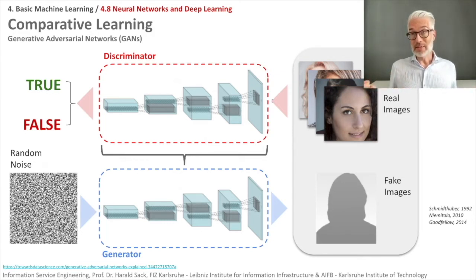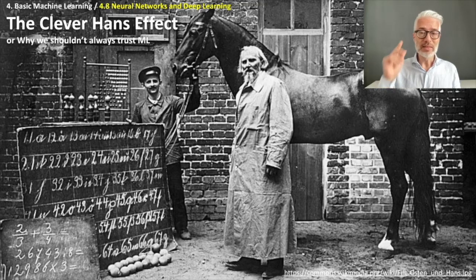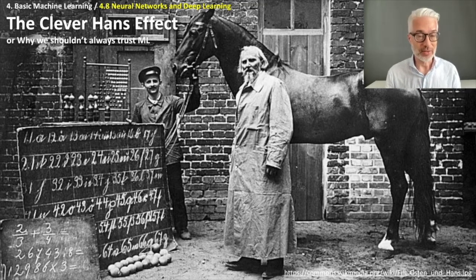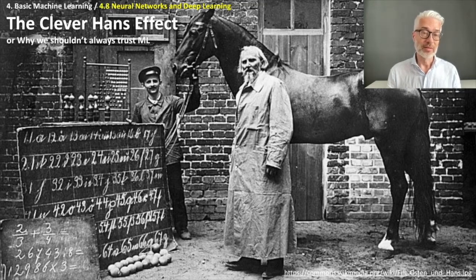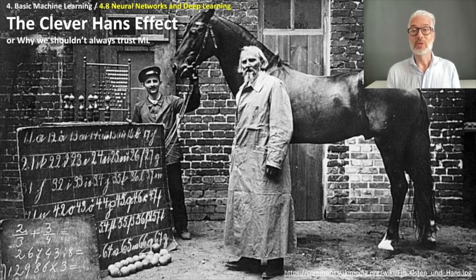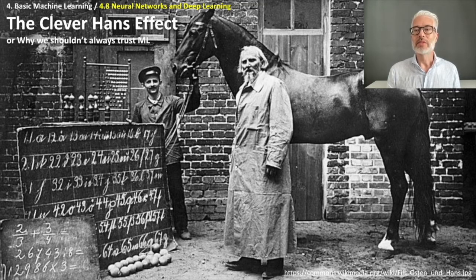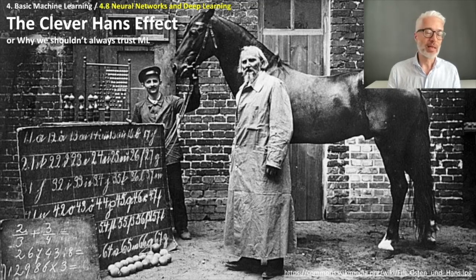You might think, seeing all these capabilities, that these networks are really smart. But we have to talk about what it really means to be smart. I want to tell you the story of Clever Hans. Clever Hans was a horse in the beginning of the 20th century, around 1900, owned by a high school mathematics teacher named Wilhelm von Osten, who was also an amateur horse trainer. Hans was said to be able to do addition, subtraction, multiplication, division, work with fractions, tell the time, keep track of the calendar, differentiate musical tones, read, spell, and understand German.